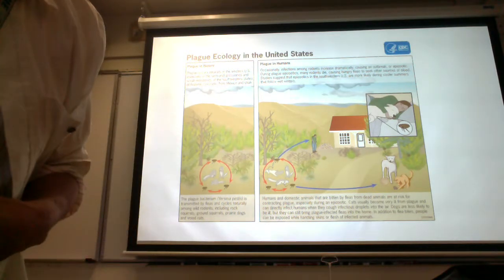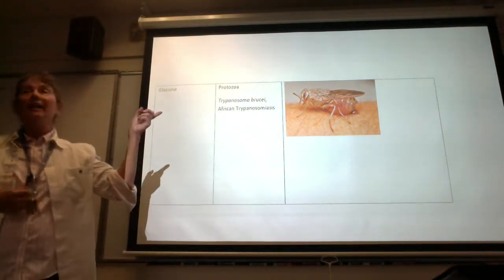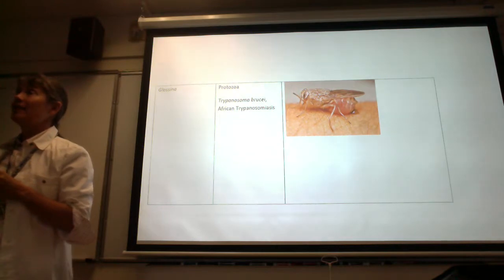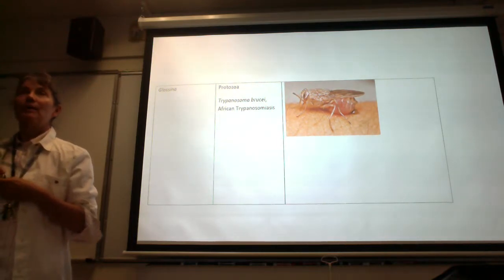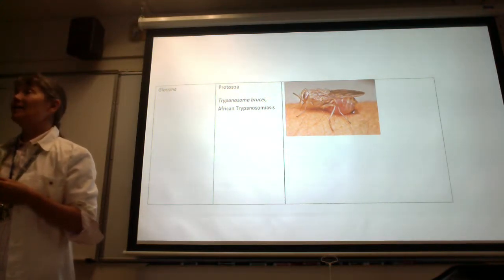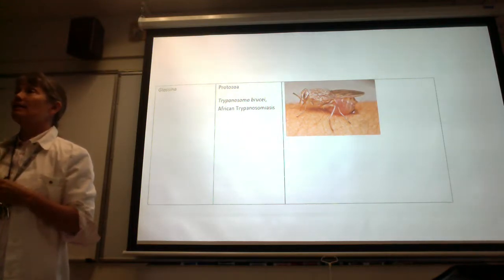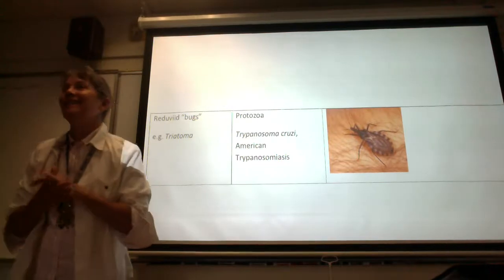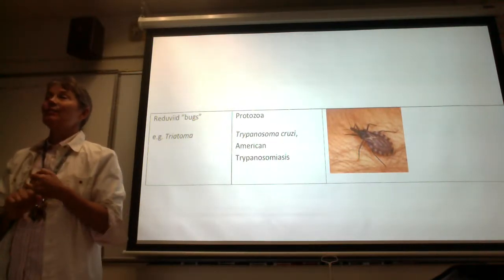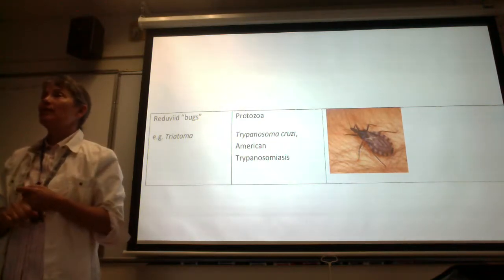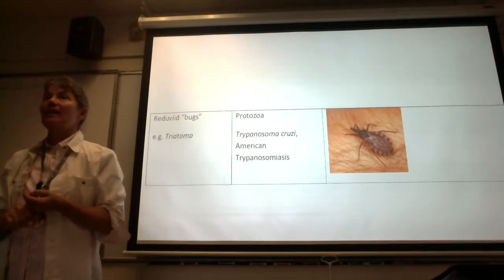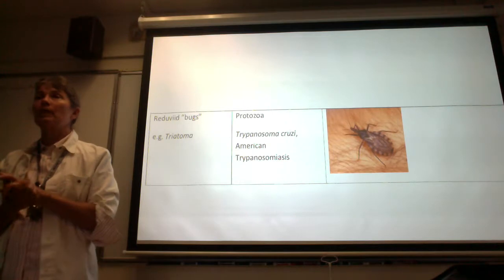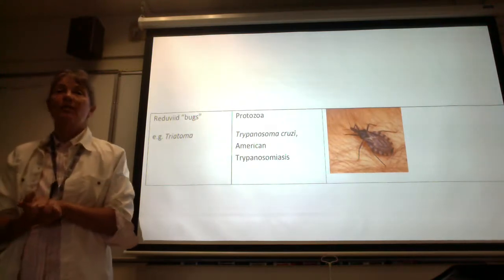This is total review - any guess who this is? We've met this character before. A blood-feeding fly: Glossina, the tsetse fly. This is the vector for which protozoal pathogen? Trypanosoma brucei. What's the name of the disease? African trypanosomiasis - common name is sleeping sickness. And this is another friend - Triatoma, the so-called kissing bug. Which protozoal pathogen does this transmit in the Americas? Chagas disease, or American trypanosomiasis. What's the scientific name of the protozoal pathogen? Trypanosoma cruzi. So that's just review.